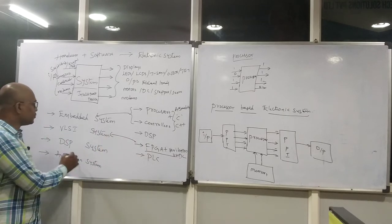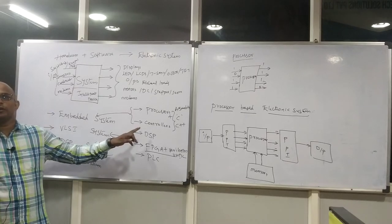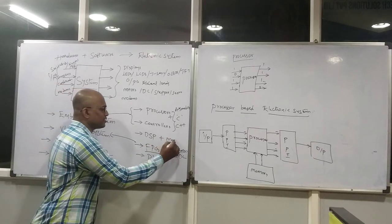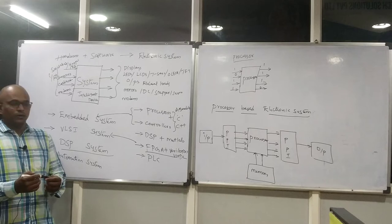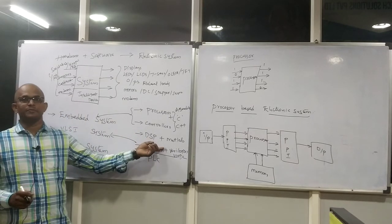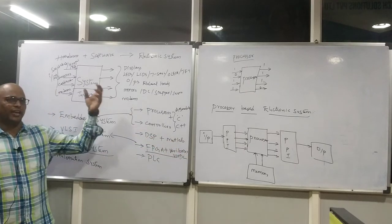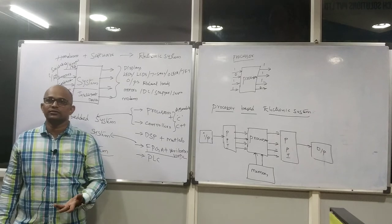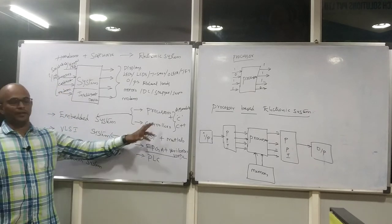For VLSI domain, you need to focus on the intelligent device FPGA — field programmable gate array — and the language Verilog or VHDL. You have two choices: Verilog or VHDL. Whatever system you do with this combination, it purely comes under the VLSI category. When you are trying to do a DSP system, you need to focus on the programmable device digital signal processor with the language MATLAB. This combination makes your DSP system — always focus on what programmable device you use and what programming language you work with.